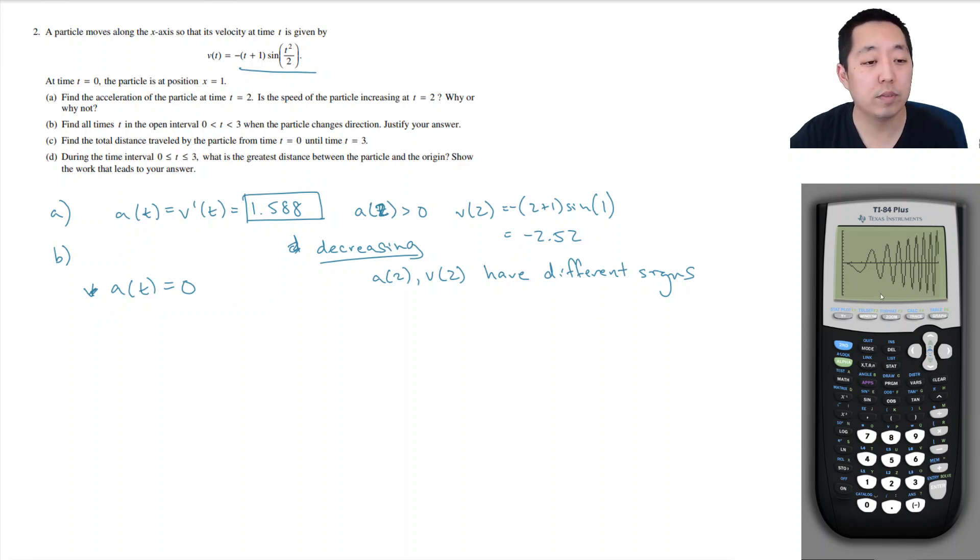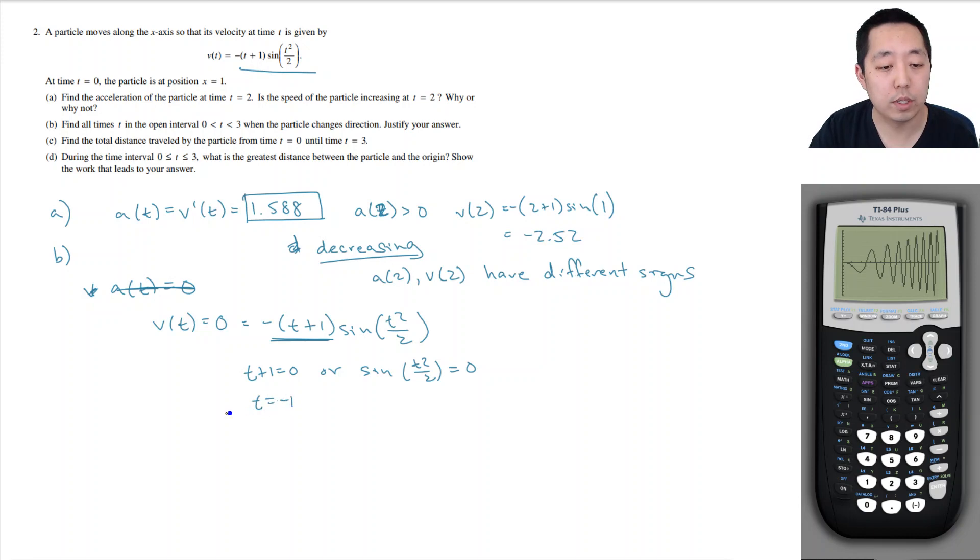Now, when does the velocity change direction? Actually, it's when v of t is equal to 0. I should just solve this. V of t is equal to 0. So that happens at negative t plus 1 times sine of t squared over 2. So if this is 0, either this is 0, so either t plus 1 equals 0, or sine of t squared over 2 is equal to 0. Well, this happens at t is equal to negative 1, so this one is outside of my range from 0 to 3, so I don't really care about this one.